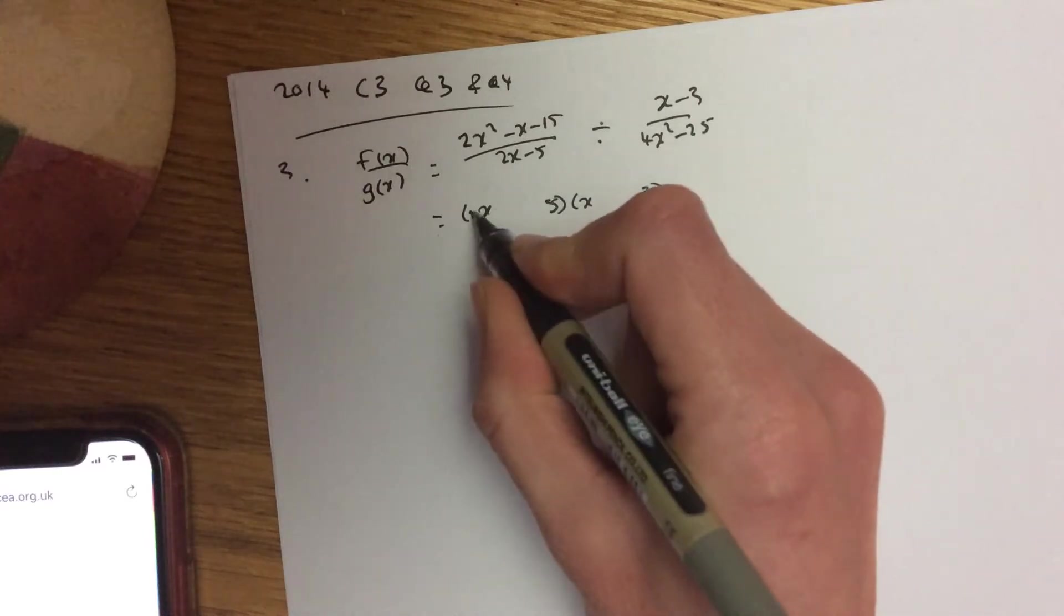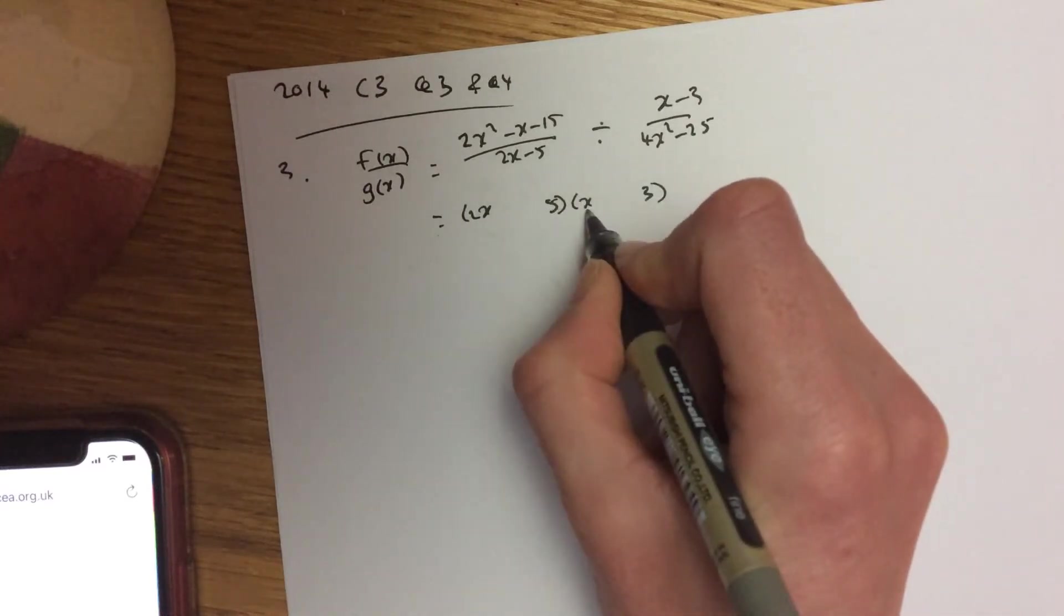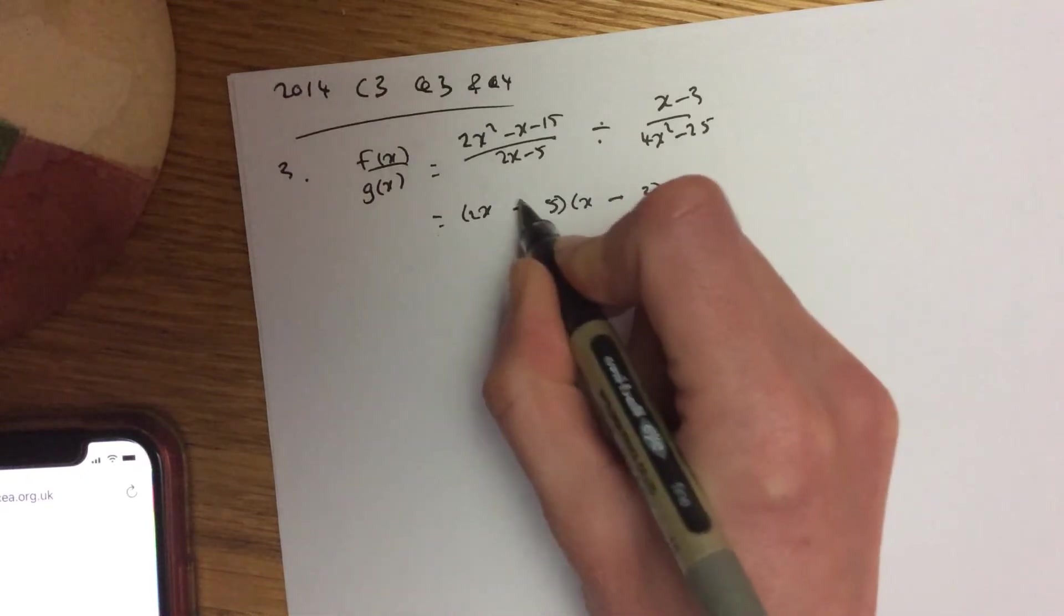So if I put a 5 there and a 3 there, I get 6x and 5x, so I want a minus x. So it's minus 6x plus 5.